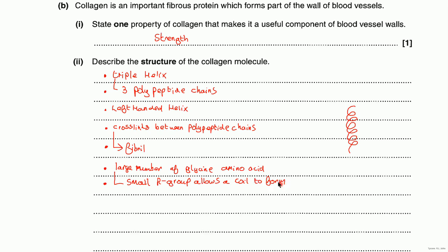The small R group allows the coil to form — it doesn't get in the way of the coiling of the polypeptide chain. They would also allow the mark that the amino acids are joined by peptide bonds. Those are the main marking points for the structure of collagen.